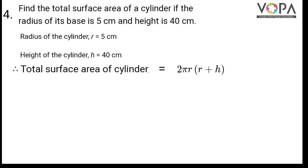Now we will have to find total surface area of the cylinder. The formula is 2πr(r + h).